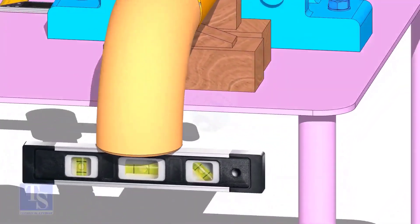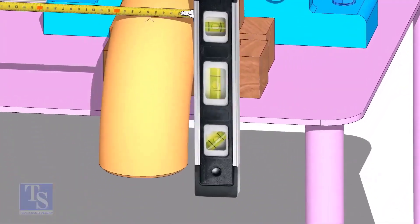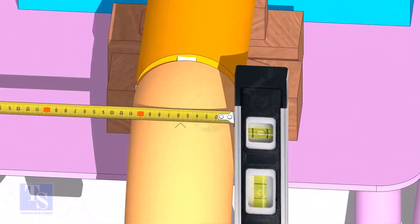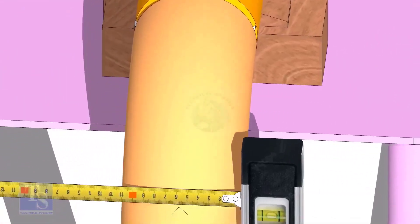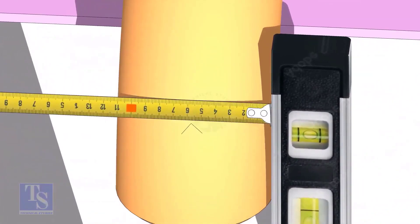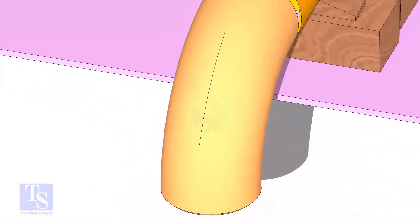Mark the center line of the elbow. OD of a four inch pipe is 114mm. Hold a level bottle at the side of the elbow vertically, and mark 57mm on the elbow at least three locations as shown. Draw a line connecting these marks.